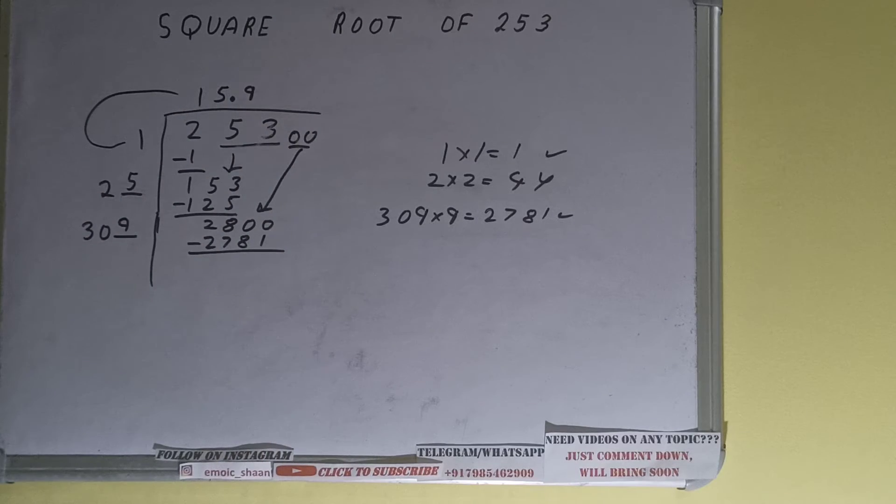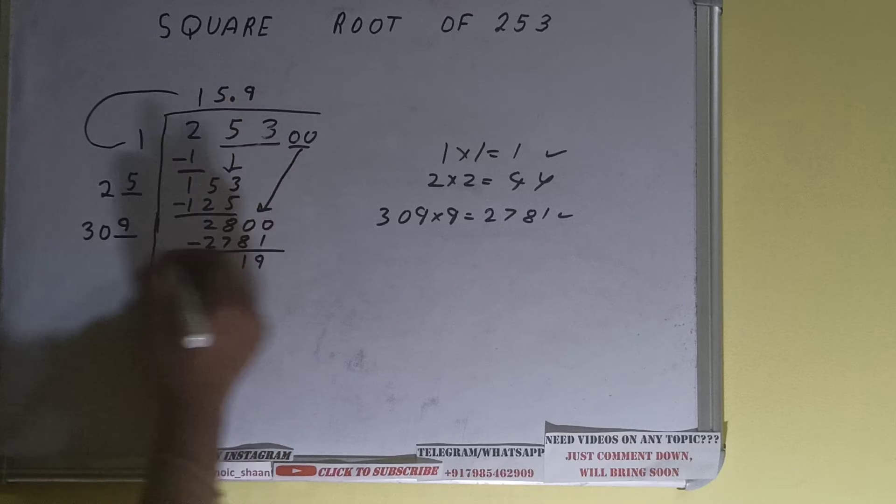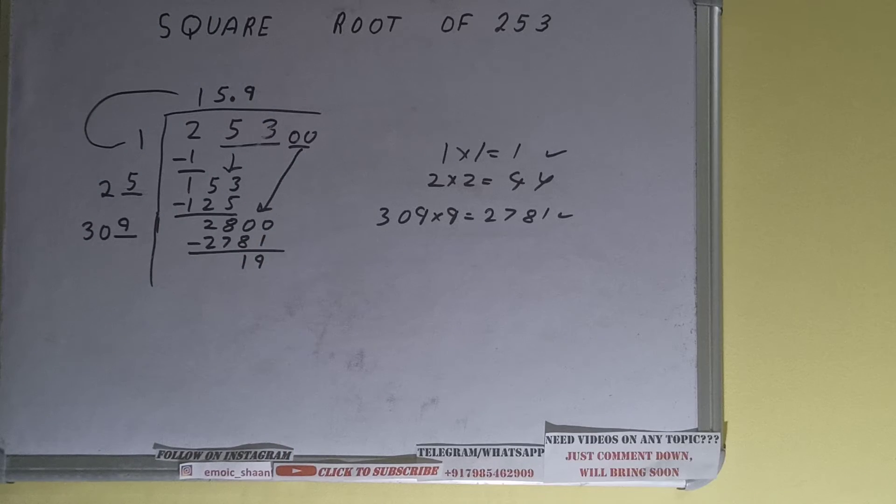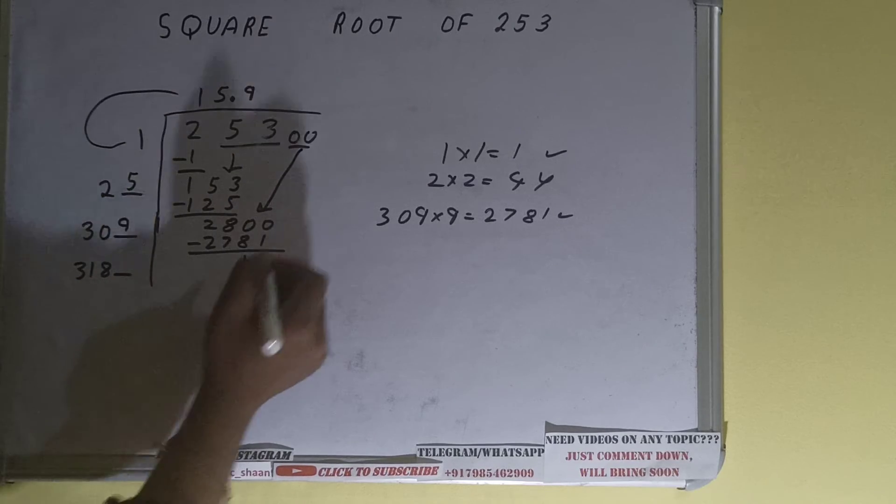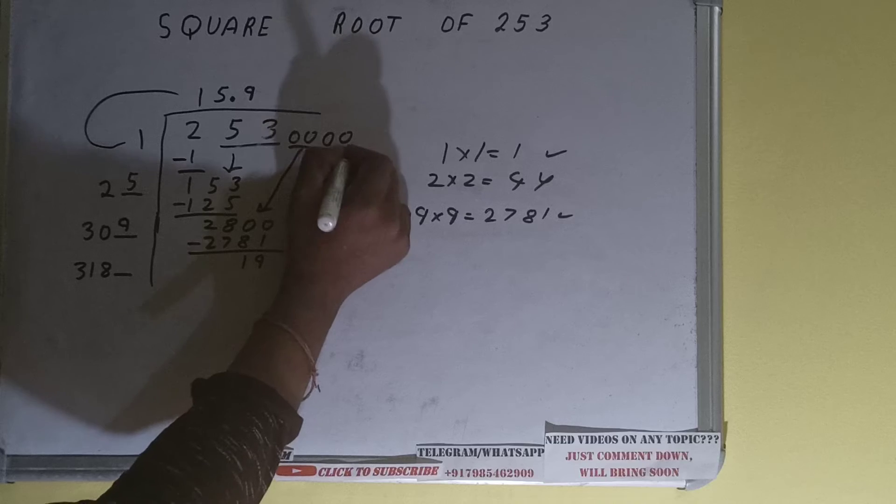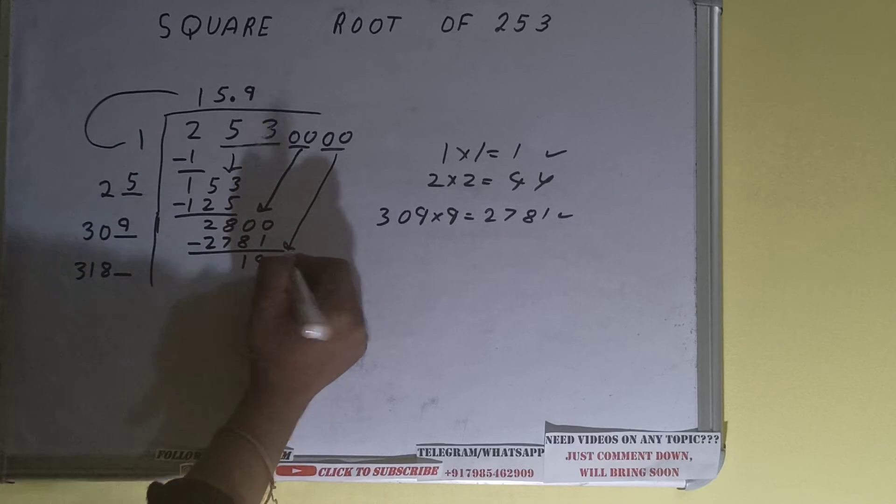Now 309 into 9 we did, so add both. 309 plus 9 will be 318, and one digit extra over here. If we need to make this number big, bring the next pair down and number will become as 1900.